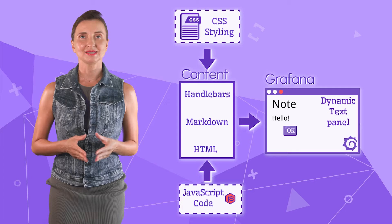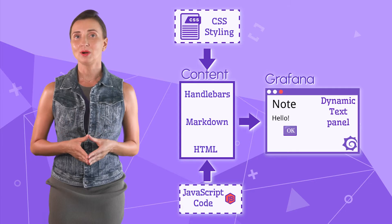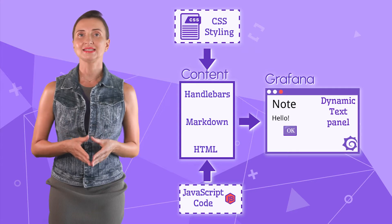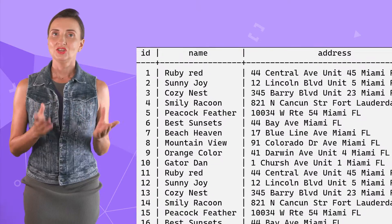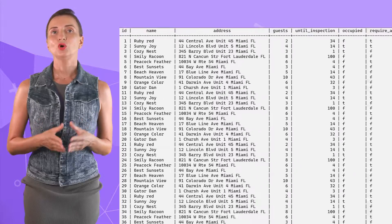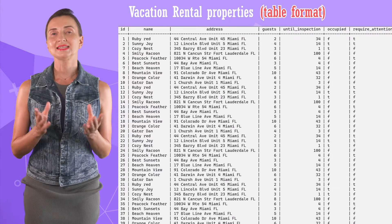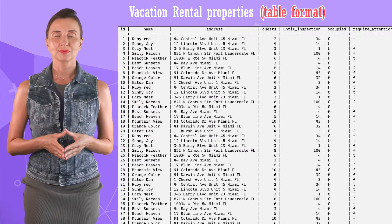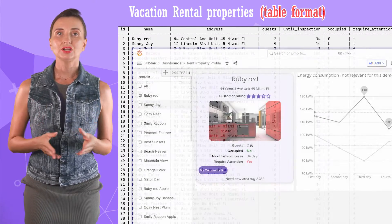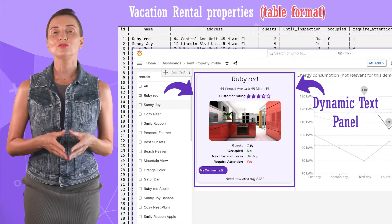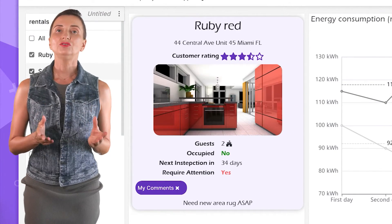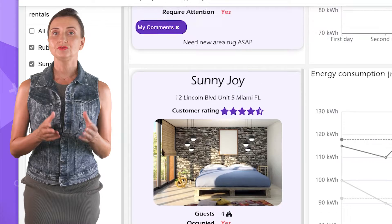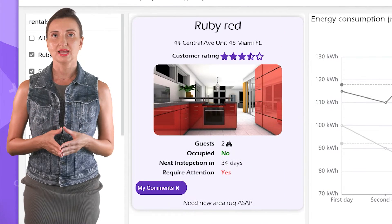In short, this plugin brings HTML design, Handlebars capabilities, and JavaScript functions into Grafana. Here I have data on vacation rental properties in a table format, and here is what a dashboard might look like for a property manager. Every unit has its card with crucial information emphasized.